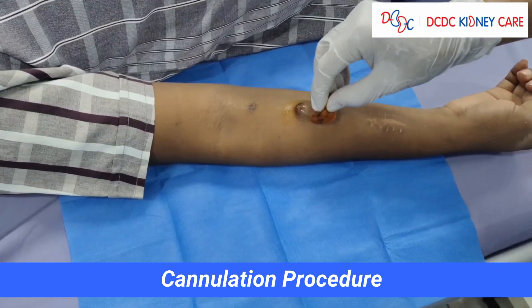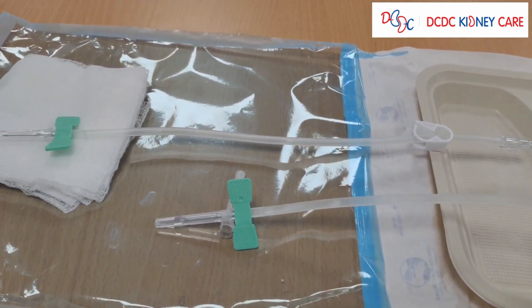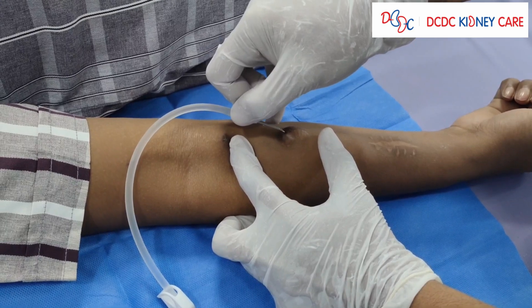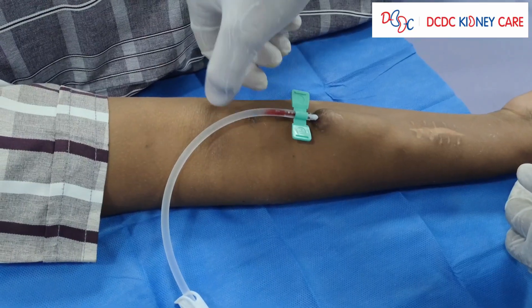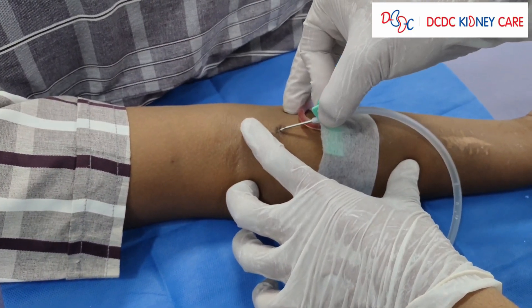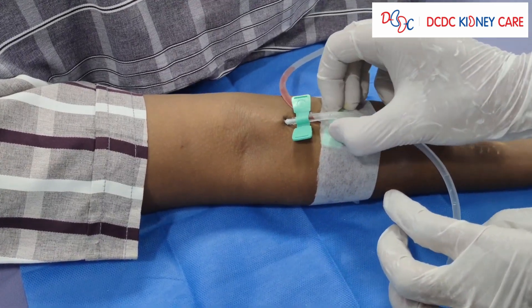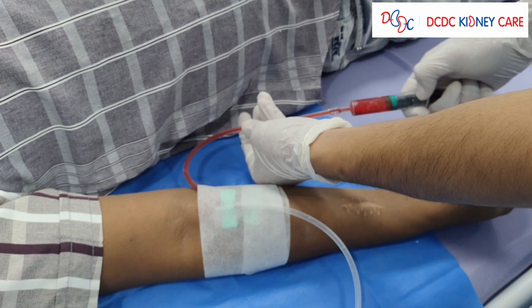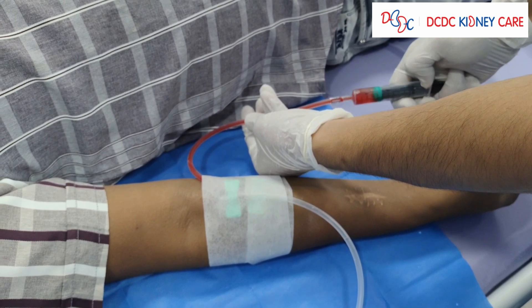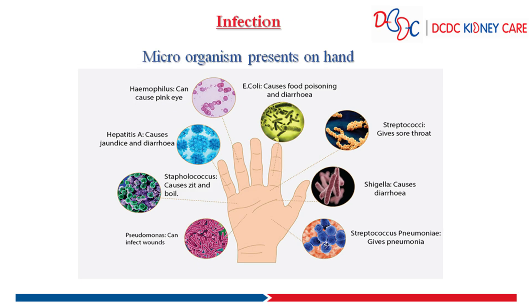Coming to the cannulation procedure: apply a tourniquet to the access arm and disinfect the access site as per unit protocol. Attach a 10 ml syringe filled with normal saline to prime the needle and remove air. Carefully cannulate the fistula using a 25-degree insertion angle. When blood flashback is observed, flatten the needle angle parallel to the skin and advance it slowly into the fistula lumen. Remove the tourniquet and tape the needle securely. Aspirate 1 to 5 ml of blood, then flush with normal saline and clamp. The syringe must aspirate and flush with ease. Monitor for signs and symptoms of infiltration — patients typically experience immediate sharp pain upon infiltration. Repeat steps for the second needle placement. Always follow hand hygiene before cannulating the AV fistula.